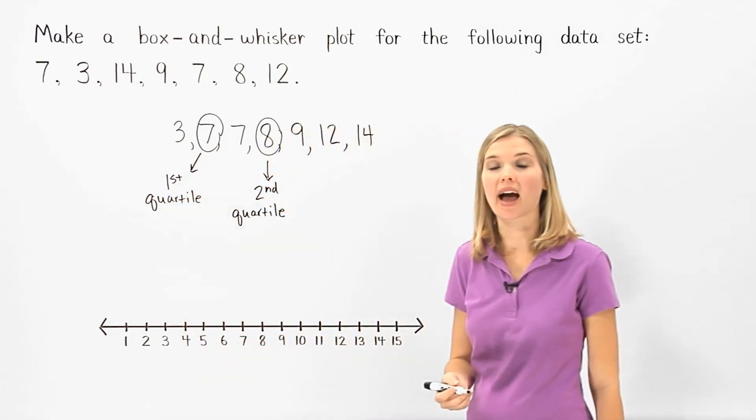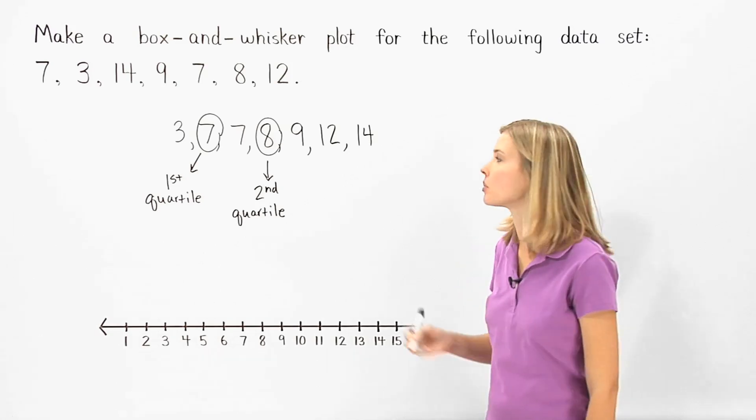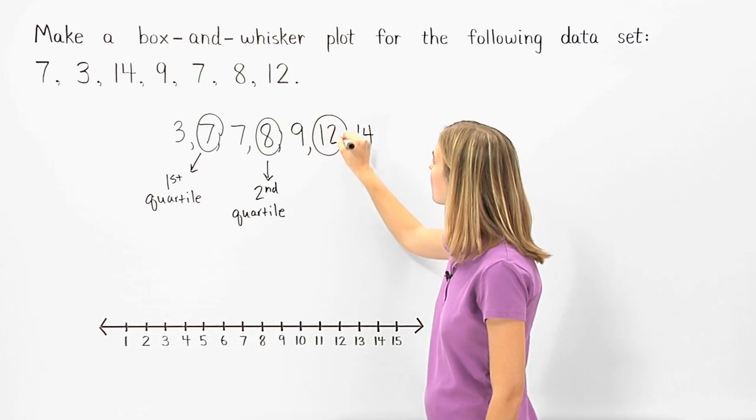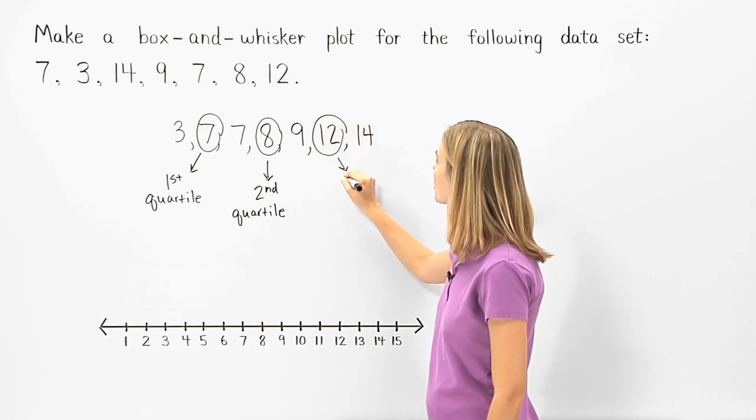And the third quartile is the median or middle number of the upper half of our data set, which in this case is 12. So 12 is the third quartile.